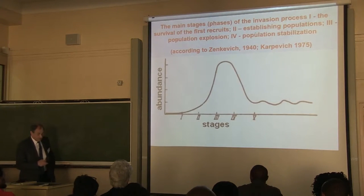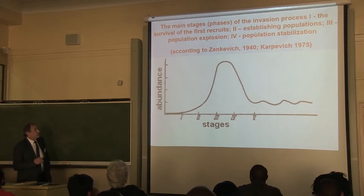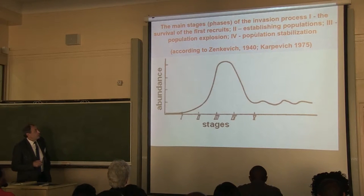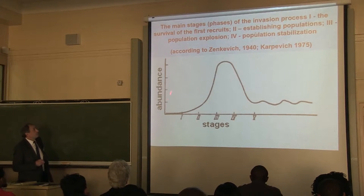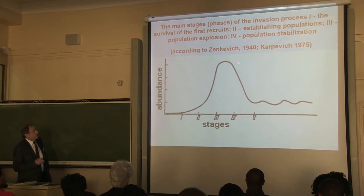Several words about the process of invasion. According to long-term observation, first of all on intentionally introduced populations, in the beginning of the last century the process of invasion was described like this. At different stages of invasion, we see the process begins with several individuals coming to a new place, then establishing a population, then an explosion of population density, and stabilization.